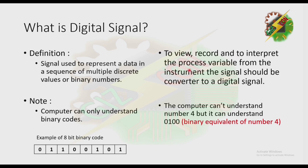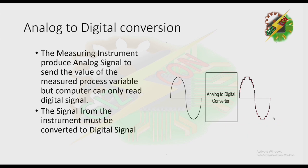To view, record, and interpret a process variable from the instrument, the signal should be converted to a digital signal. The computer cannot understand the number 4, but it can understand 0100, which is the binary equivalent of number 4. Measuring instruments produce analog signals to send the value of the measured process variable, but computers can only understand a digital signal. Therefore, the signal from the instrument must be converted to a digital signal.